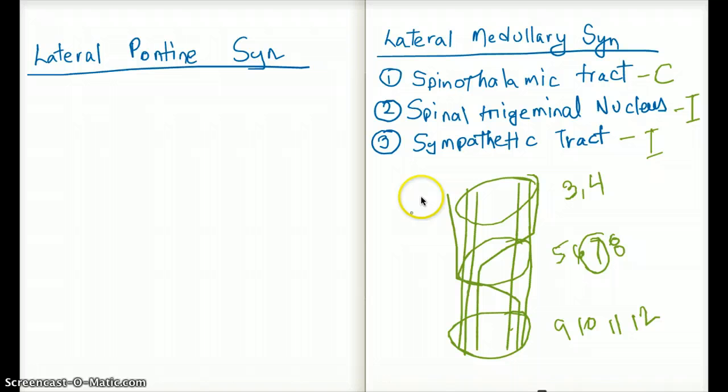All these three structures are present in the lateral medulla. Now sometimes you can forget these structures, so another easy way of remembering are three S's: sympathetic tract, spinal trigeminal nucleus, and spinothalamic tract all start with S's. This is my lateral medullary syndrome.